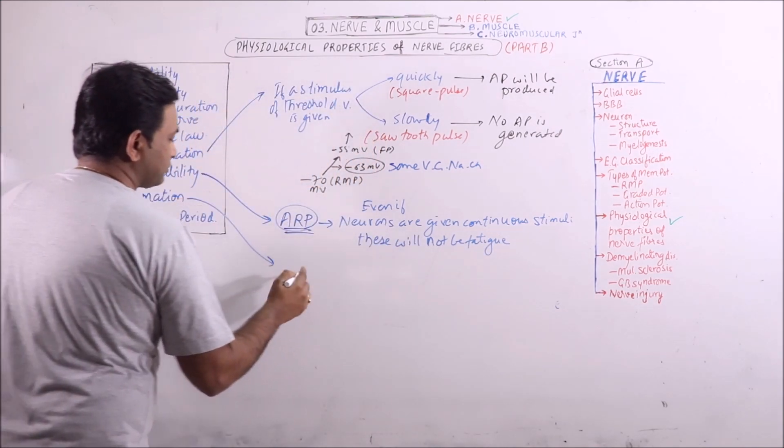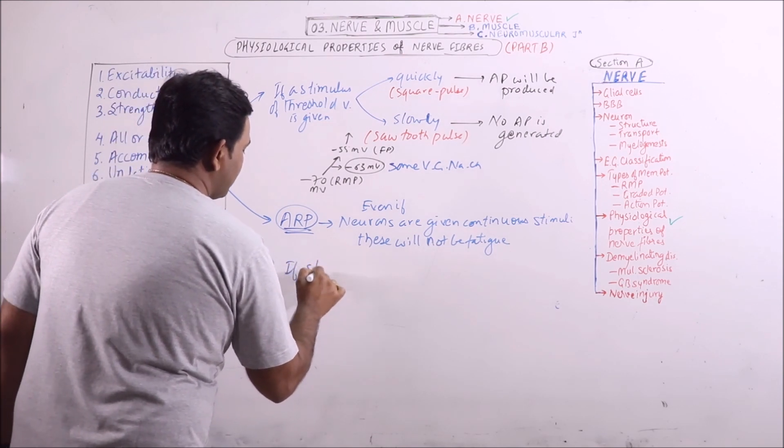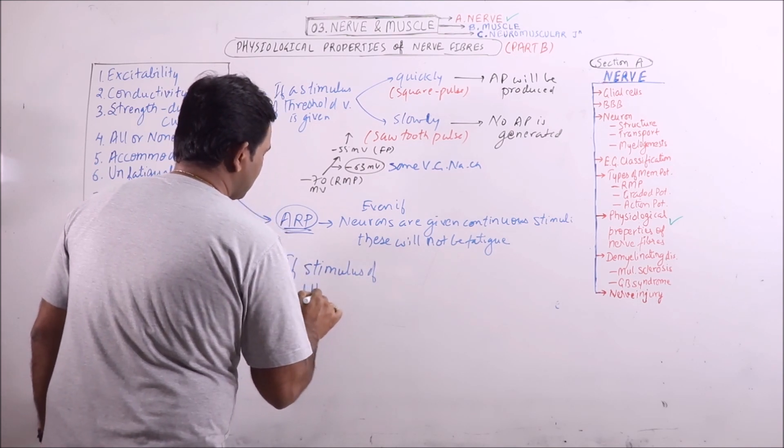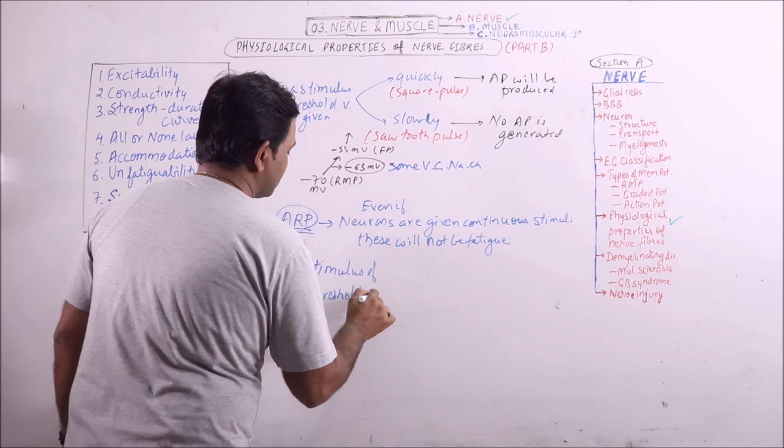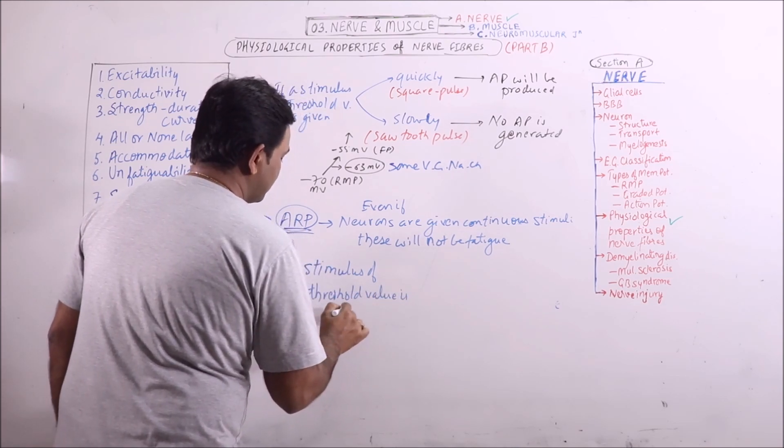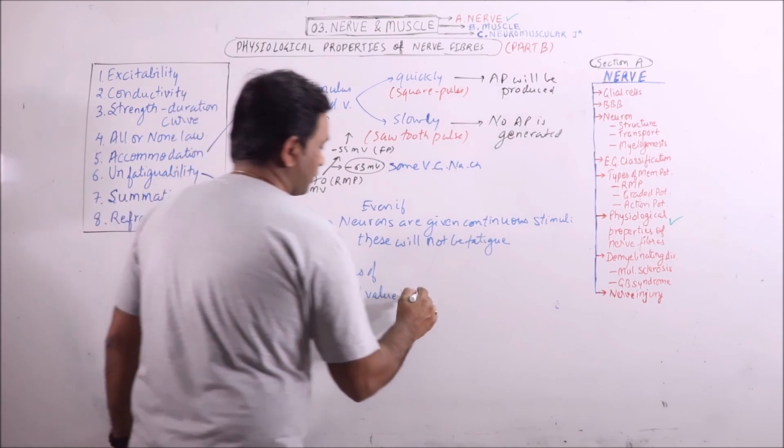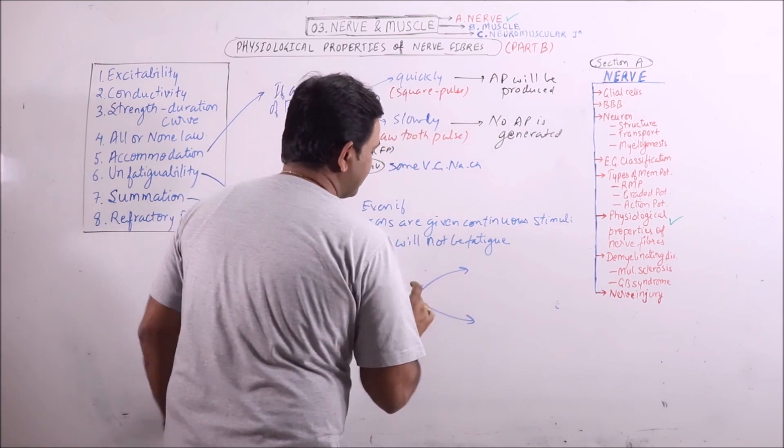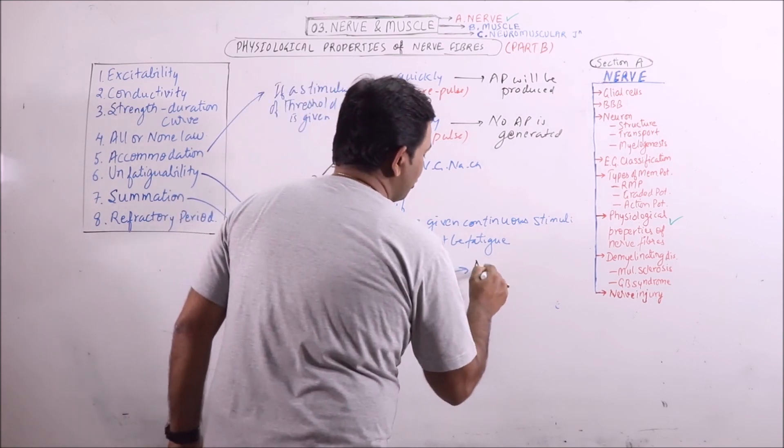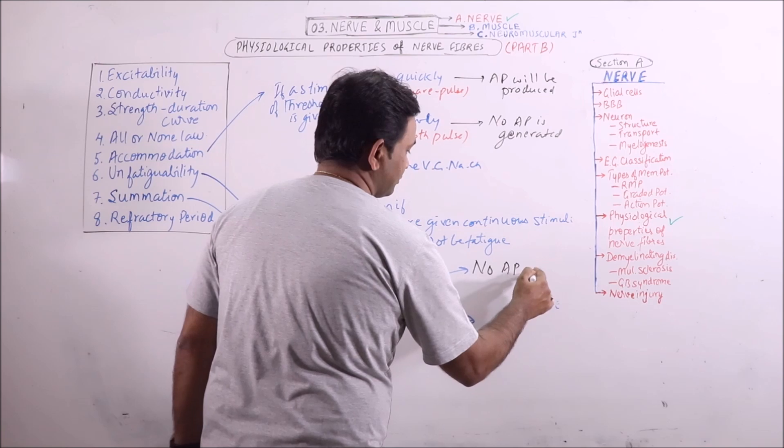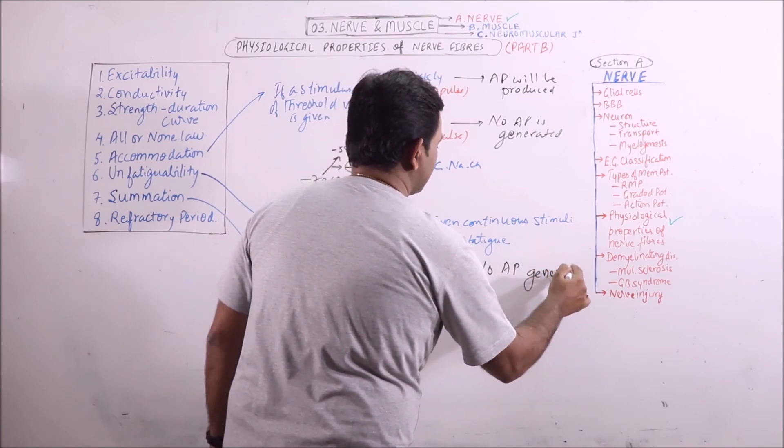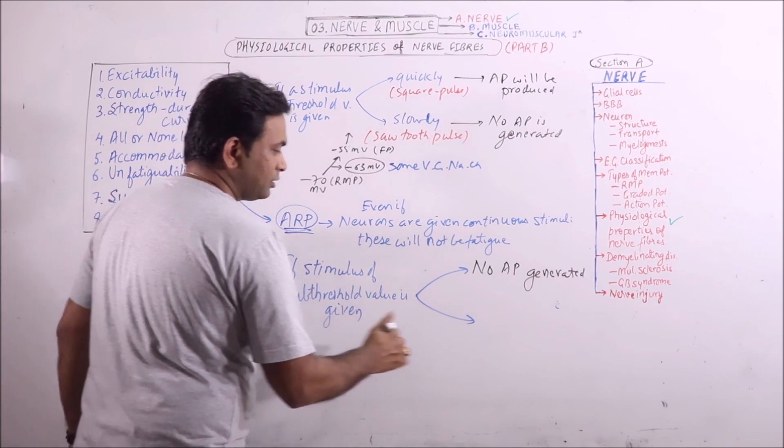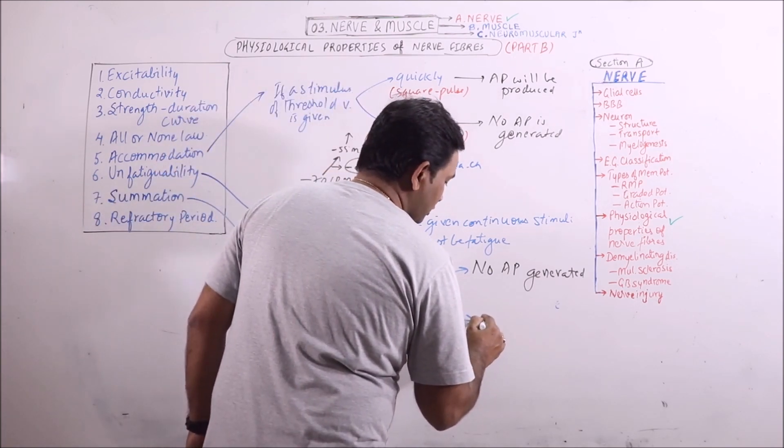Summation: if stimulus of sub-threshold value is given, then we know that no action potential is generated. But if the stimulus of sub-threshold value is given successively,